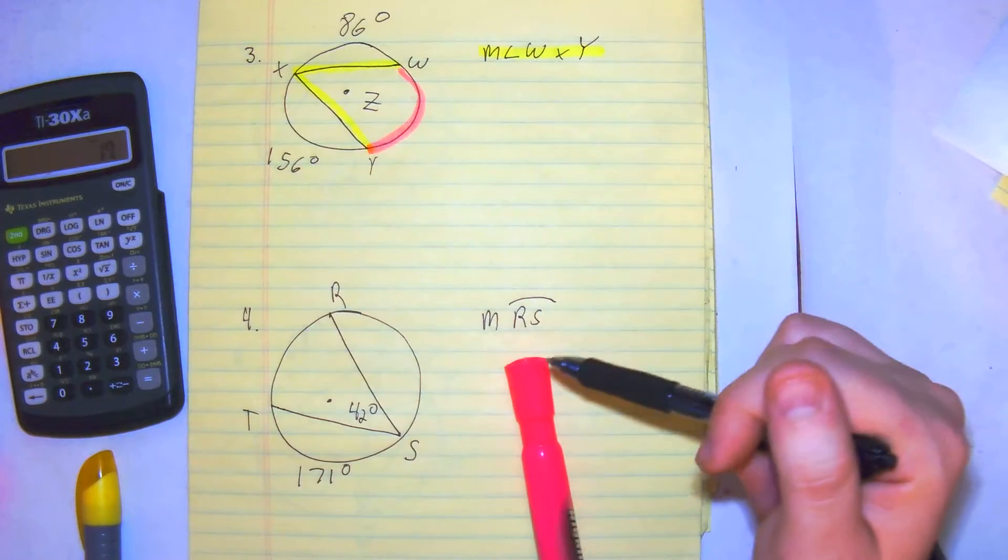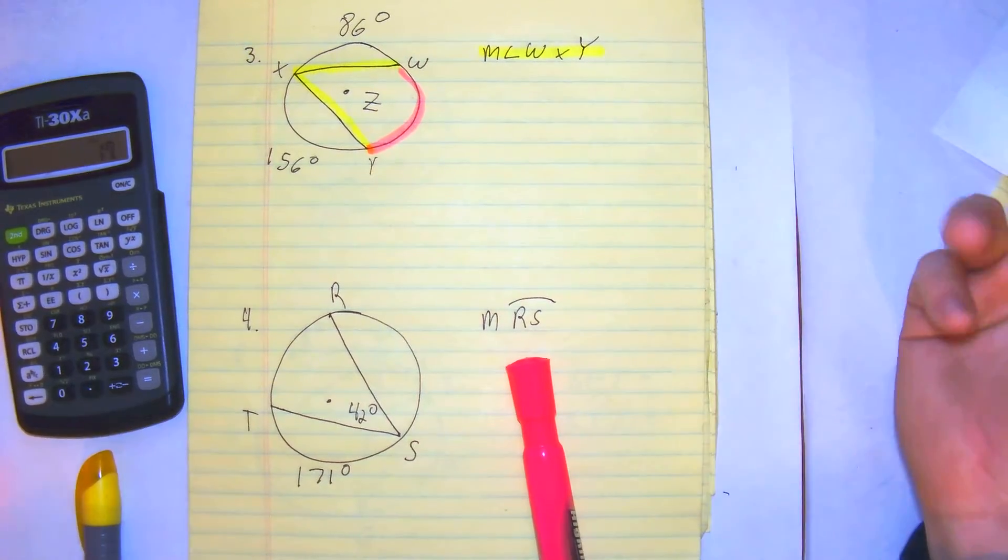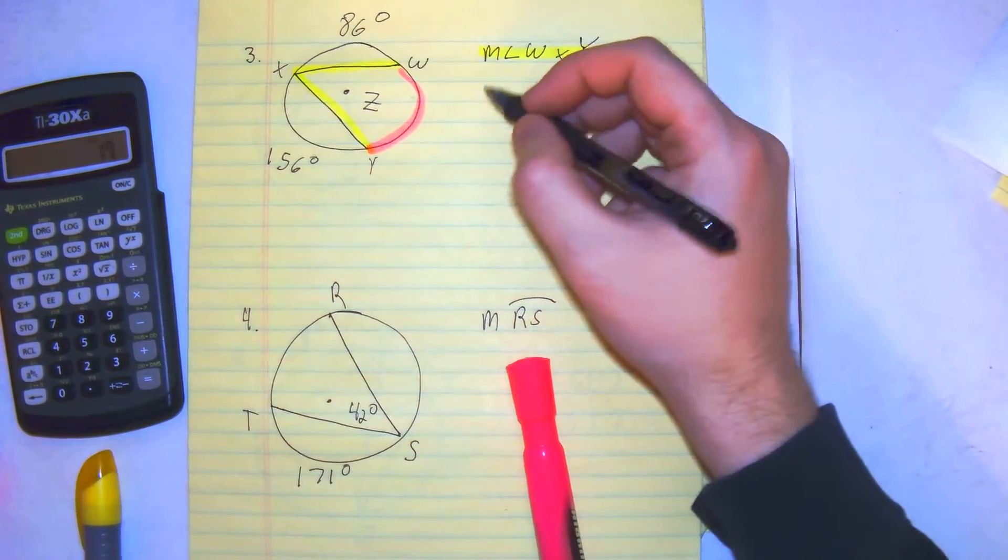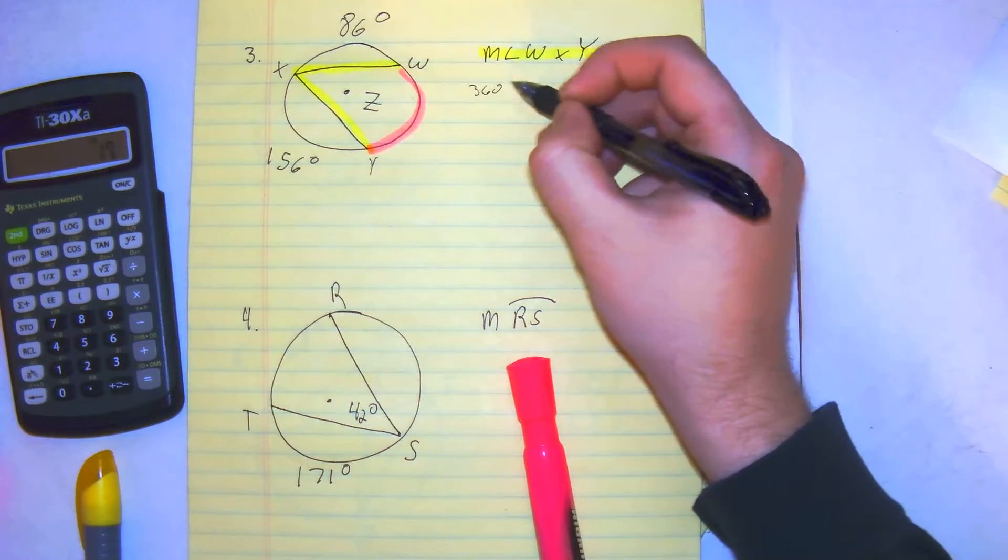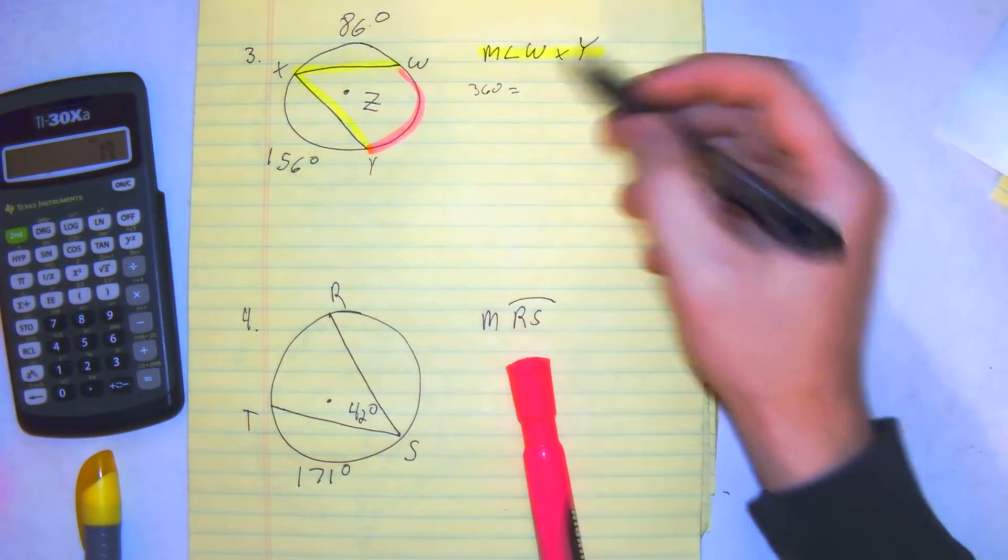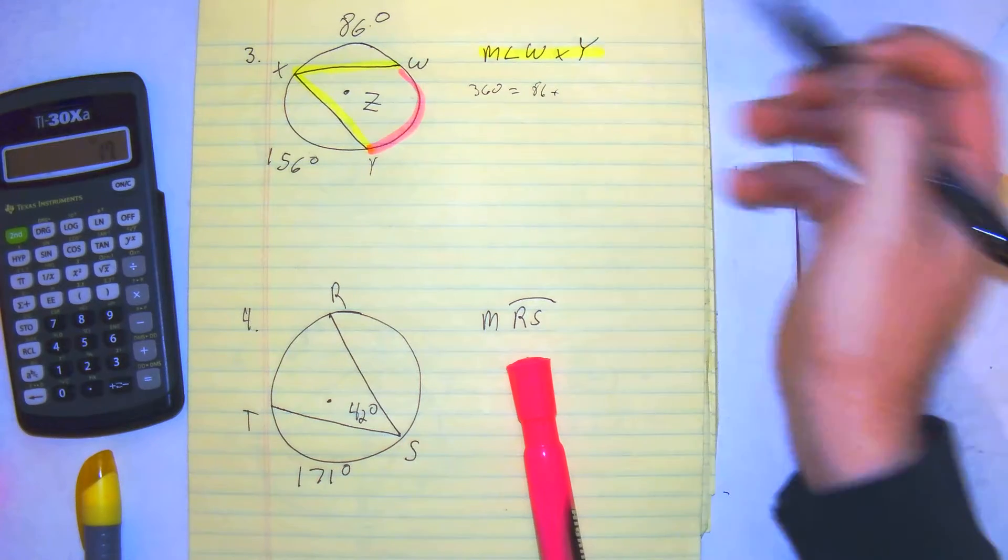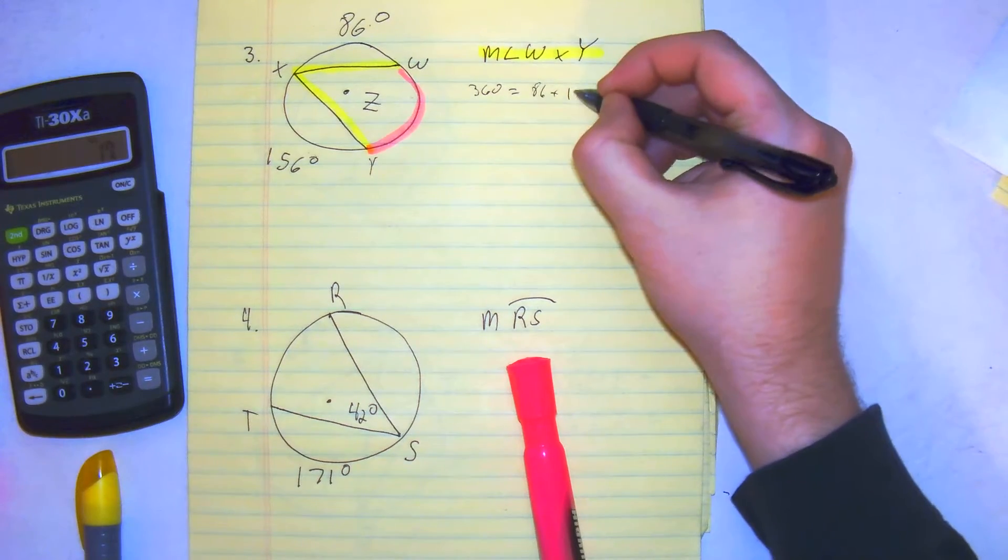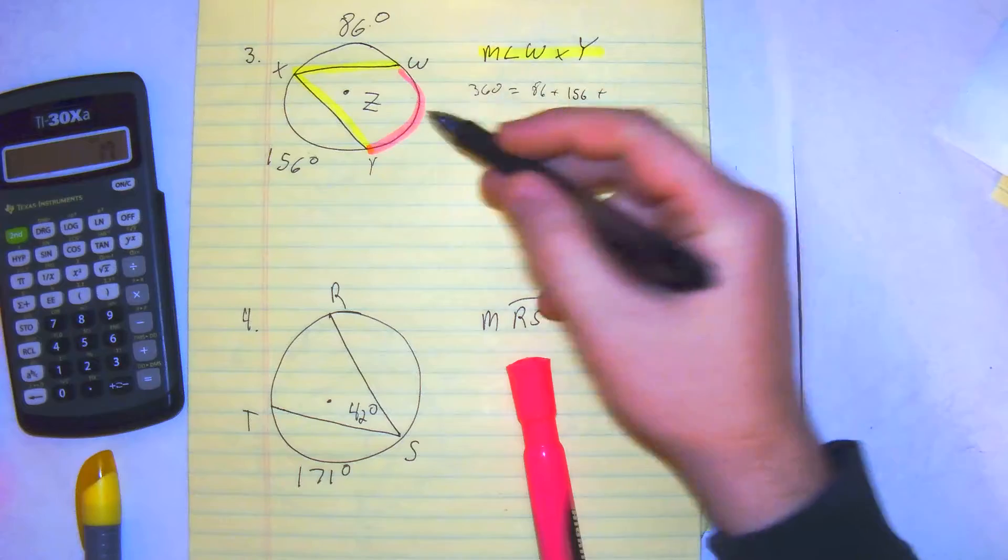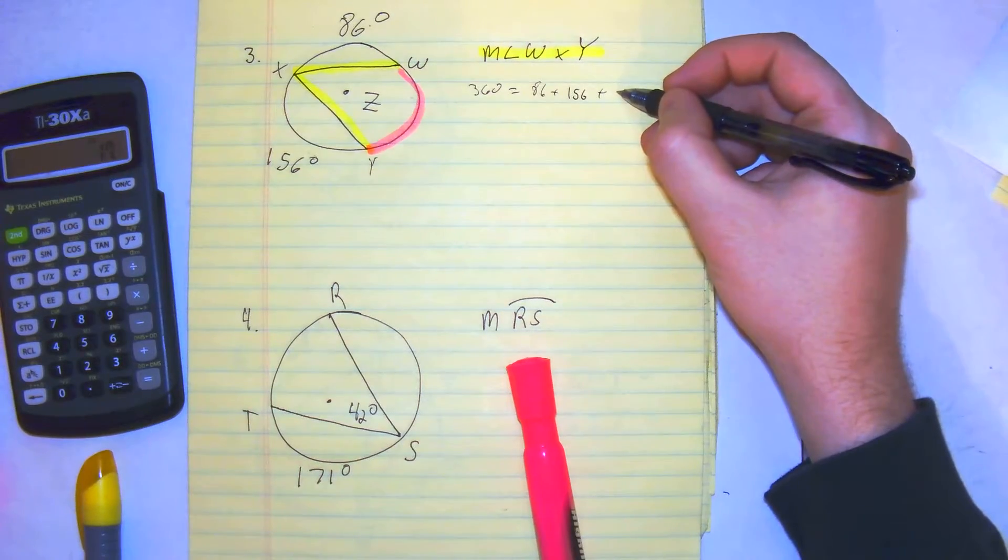We have two-thirds of the circle. So really, I'll do this the long way this time, but then I'll show you the shortcut. You can just do it in the calculator. 360 is what the circle equals. You know two-thirds of it: 86 plus 156 plus the arc of y. We'll call it y.